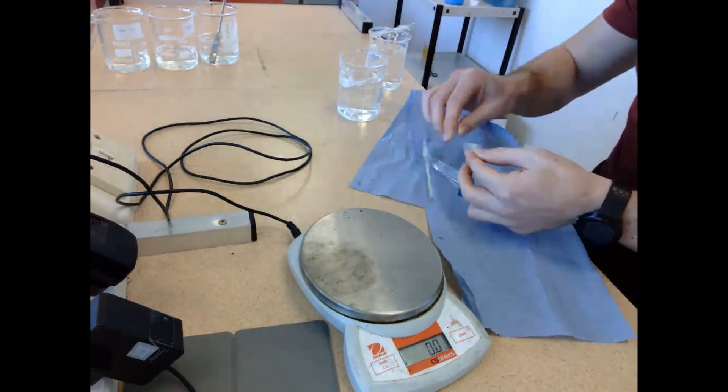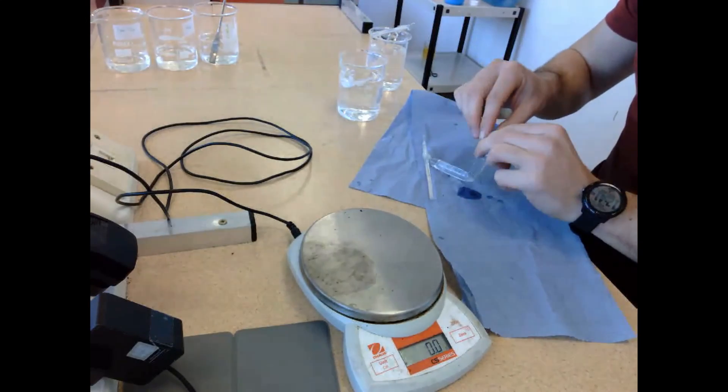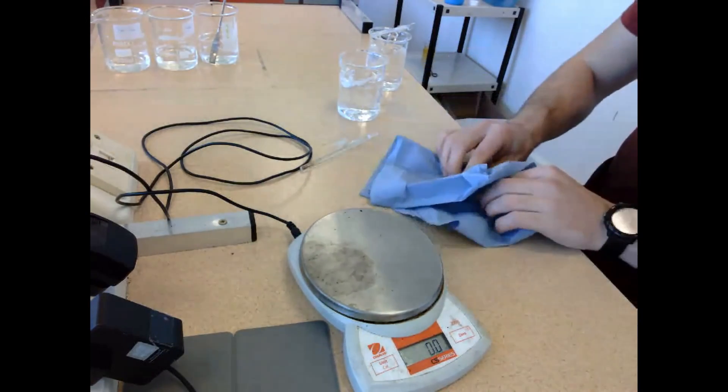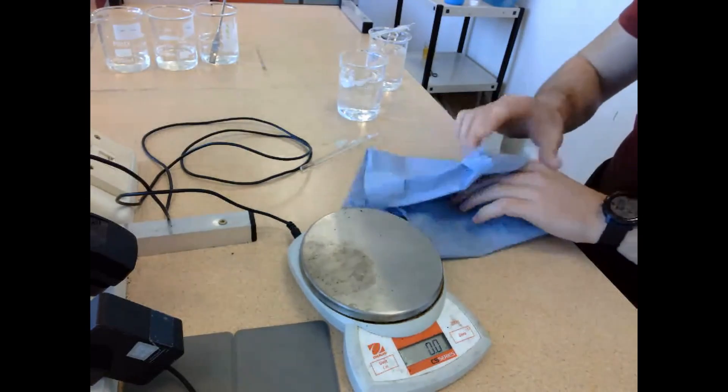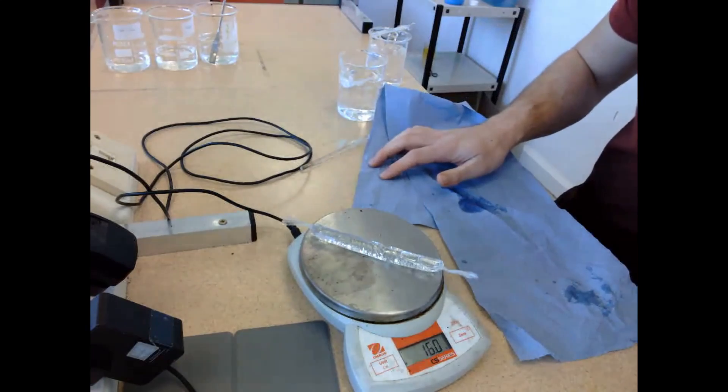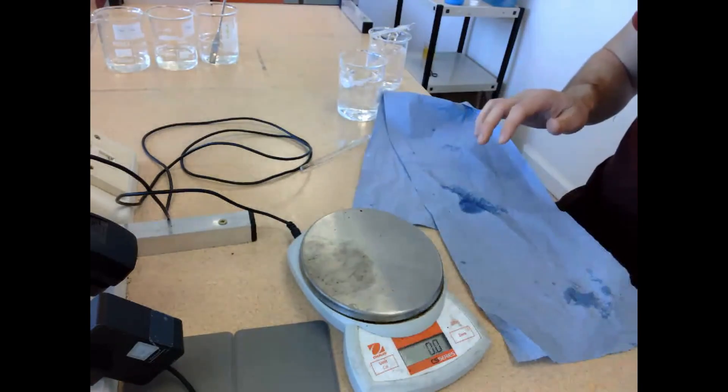I have to remove the sellotape and dry this off because we're finding the mass, and the mass shouldn't have really changed. When I put it on this mass balance here, it comes back at 16.1 grams, so we can say that osmosis has not occurred in visking tubing A.